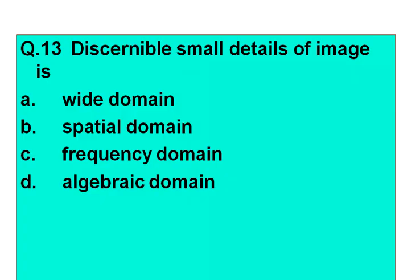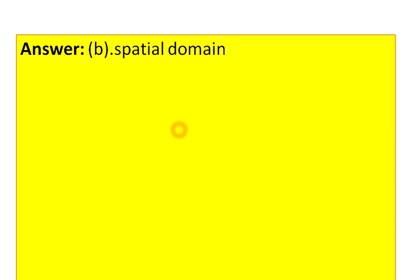Question number 13: Discernible small details of images are represented in which domain? Option A: wide domain. Option B: spatial domain. Option C: frequency domain. Option D: algebraic domain. The answer is option B, spatial domain — the spatial domain contains the discernible small details of an image.